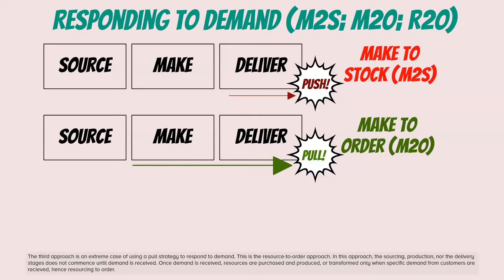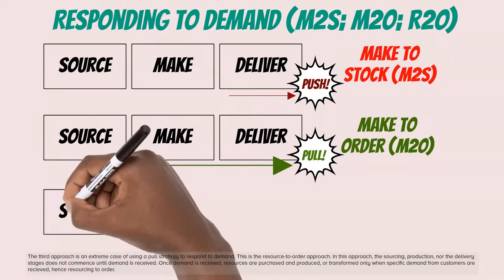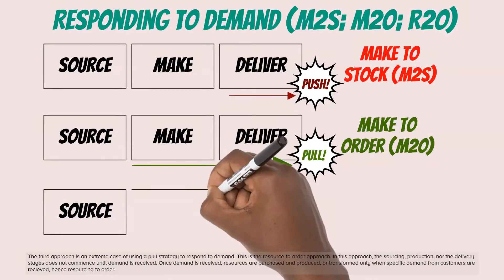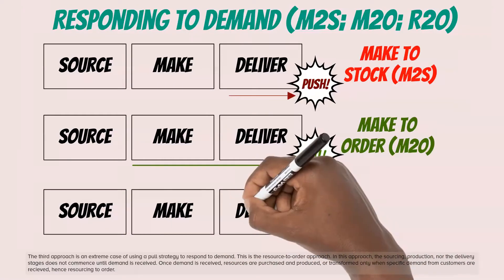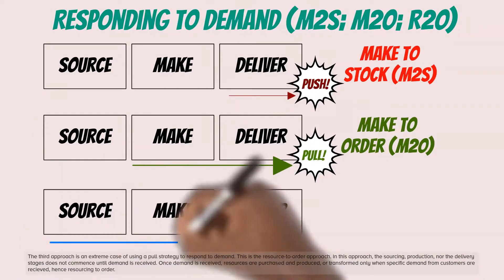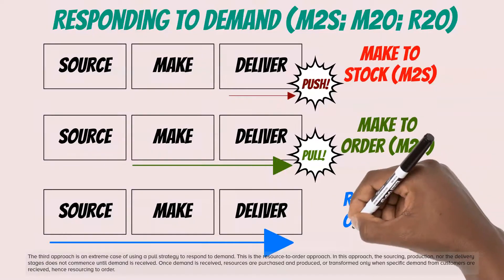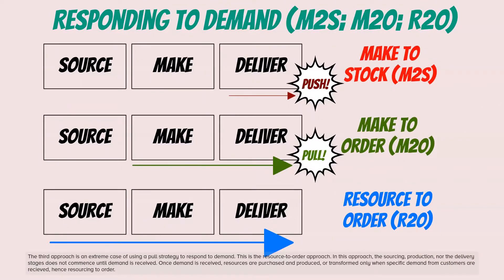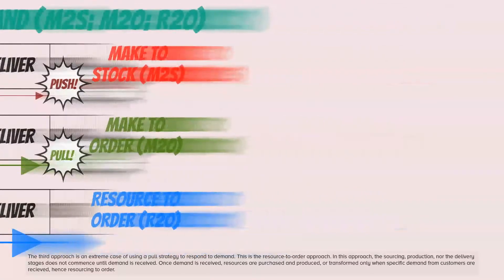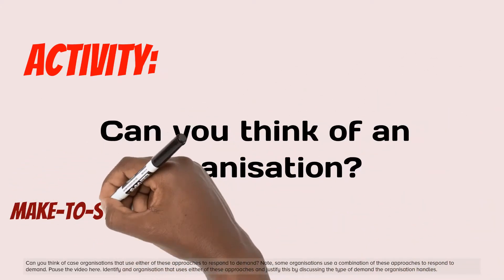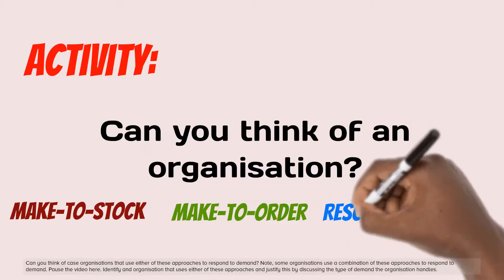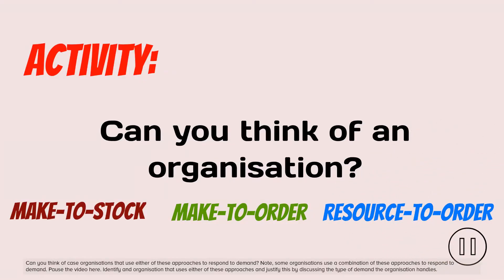The third approach is an extreme case of using a pull strategy to respond to demand — this is the resource to order approach. In this approach, the sourcing, production, and delivery stages do not commence until demand is received. Once demand is received, resources are purchased and produced or transformed only when specific demand from customers is received, hence resourcing to order. Consider organizations that use either of these approaches. Note that some organizations use a combination of these approaches. Identify an organization that uses either of these approaches and justify this by discussing the type of demand the organization handles.